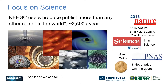Our big focus is on science. Our users produce and publish more than any other center in the world — about 2,500 articles per year in scientific journals. In 2018, we had 14 articles in Nature, 31 in Nature Communications, 82 in other Nature-related journals, 11 in Science, and 31 in PNAS. We also have six Nobel Prize winning users, and we take great pride in that.